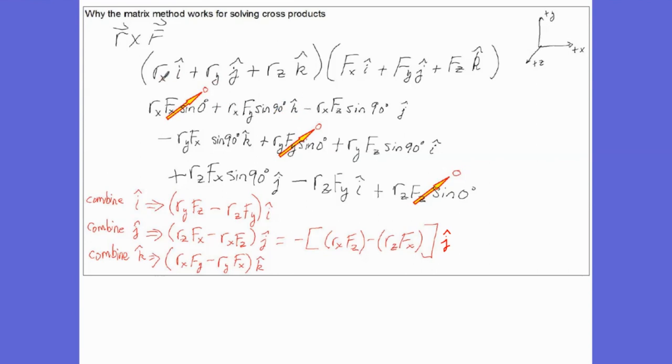Then we cross Rx with Fz. Again, the magnitude is Rx Fz sine 90. And the direction now, if I sweep my fingers from X to Z of my right hand, you'll see that your right thumb points downward. So it's in the negative Y direction. And you can follow through distributing all those cross products. This is what you get.